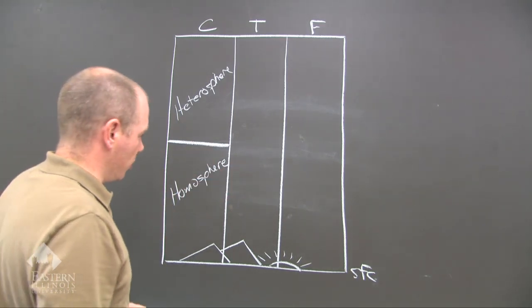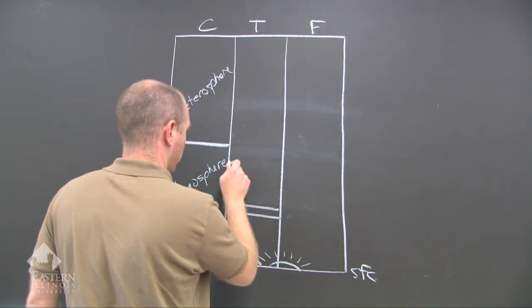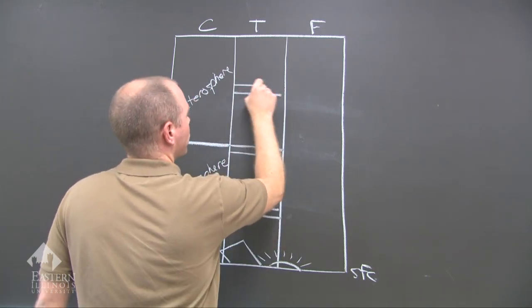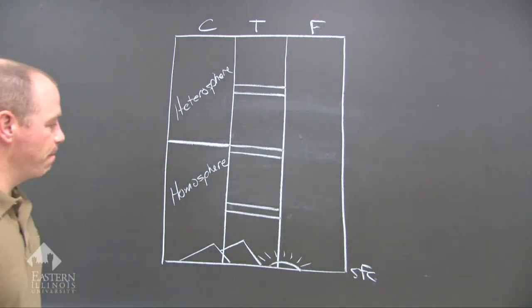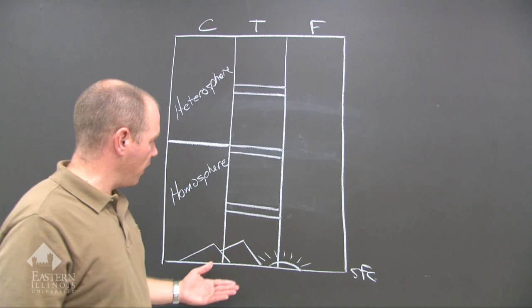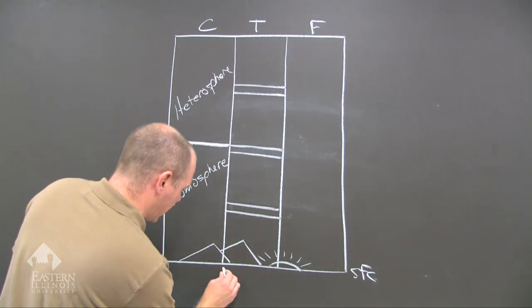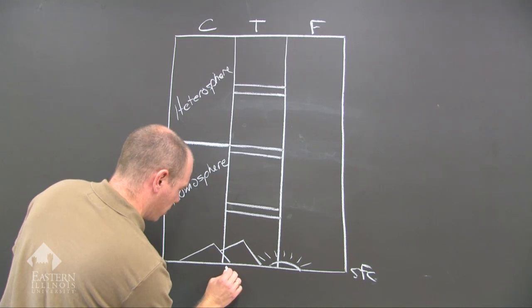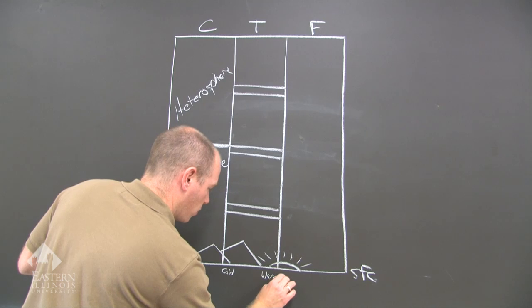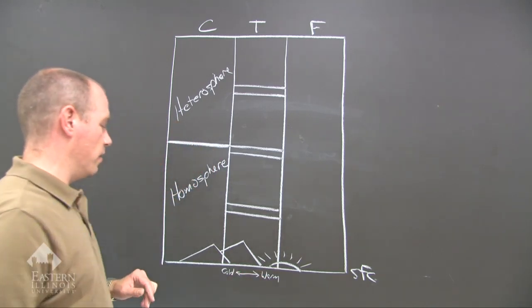Now we move on to temperature. There are four major shells and three minor shells, and they're based on the temperature profile of each shell. I'm going to put 'cool' or 'cold' and 'warm' along the surface axis because we're going to make this a graph to show how temperature changes with altitude.